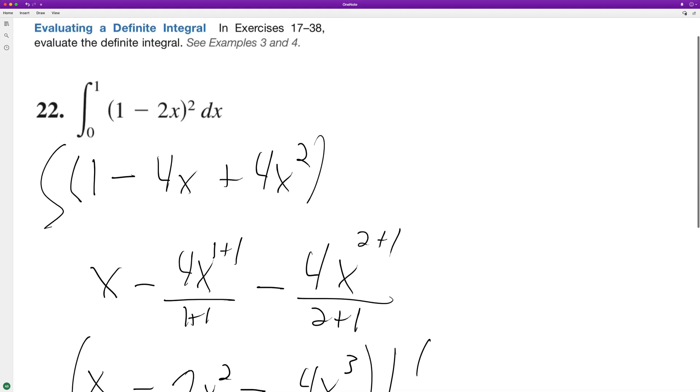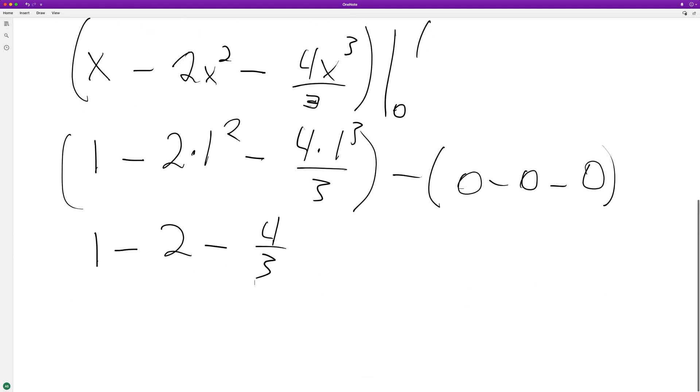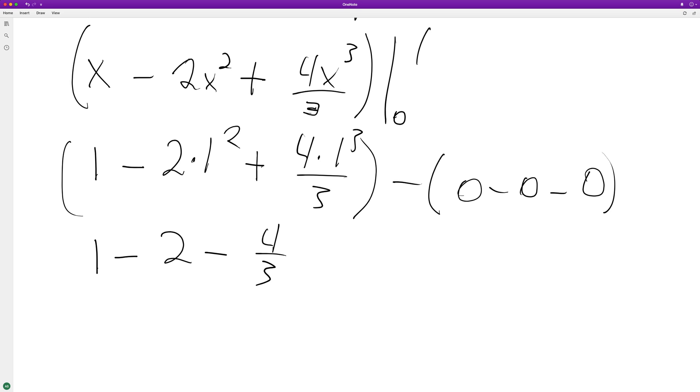Let me make sure here. Oh, this should be a plus, sorry. So this becomes negative 1 plus 4 thirds. And then 4 thirds plus negative 1 is just positive 1 third. And that's it.